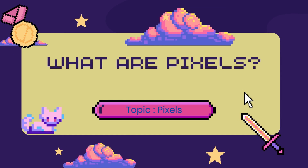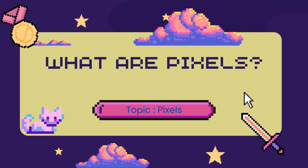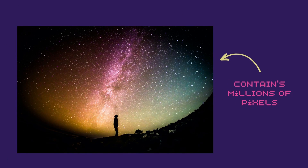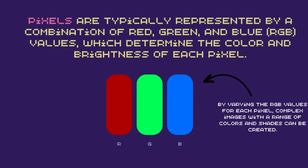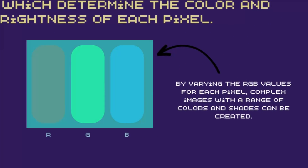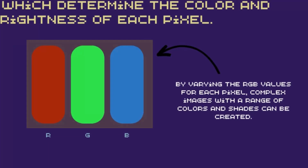What are pixels? A pixel is a tiny dot that makes up a digital image. When you zoom in on an image, you'll see that it's made up of thousands or even millions of individual pixels. Pixels are typically represented by a combination of red, green, and blue — RGB values — which determine the color and brightness of each pixel. By varying the RGB values, complex images with a range of colors and shades can be created.